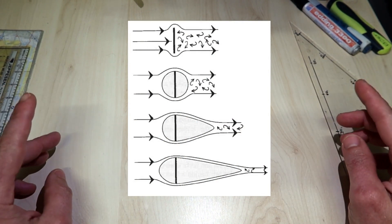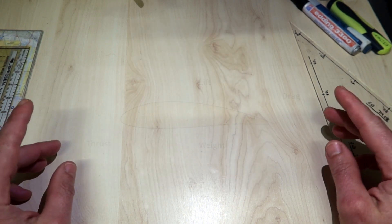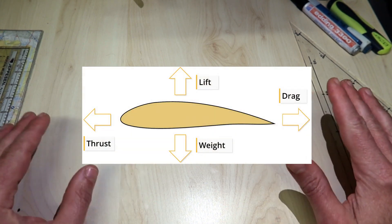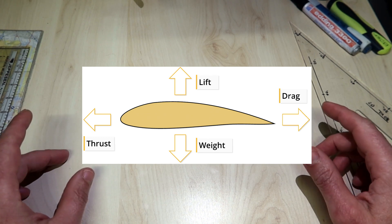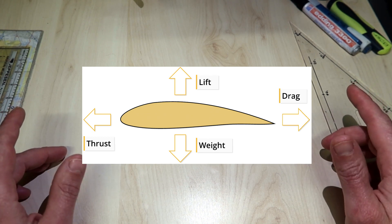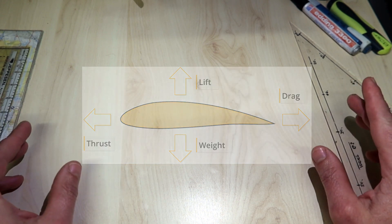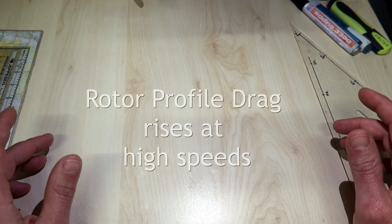Rotor profile drag would at first sight seem to be independent of forward speed, as the increased drag on the advancing blade would be offset by the reduced drag of the retreating blade. In fact, this effect is proportional not to the blade speed but to the square of the blade speed.